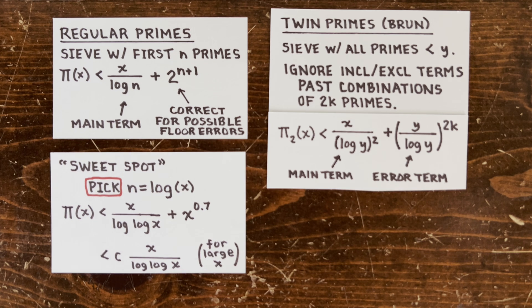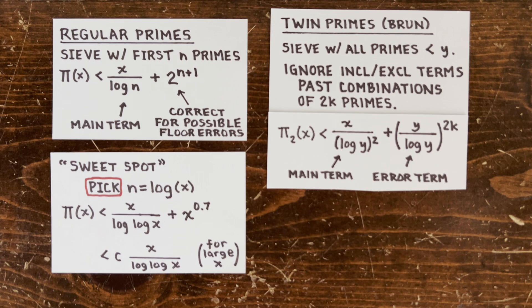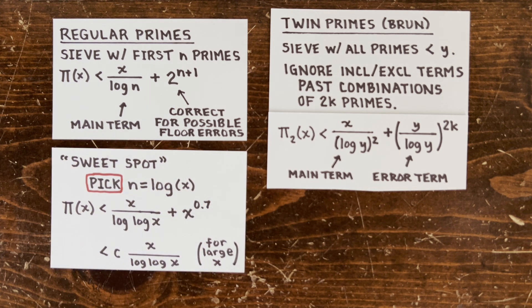And if we pick n too low, like one or two, the main term will dominate. But again, we'll just say that π(x) is less than x. So n equals log x turned out to be a sweet spot, giving us a dominant main term that's actually useful, saying the larger x is, the lower percentage of primes between one and x, aka the primes thin out at this rate.